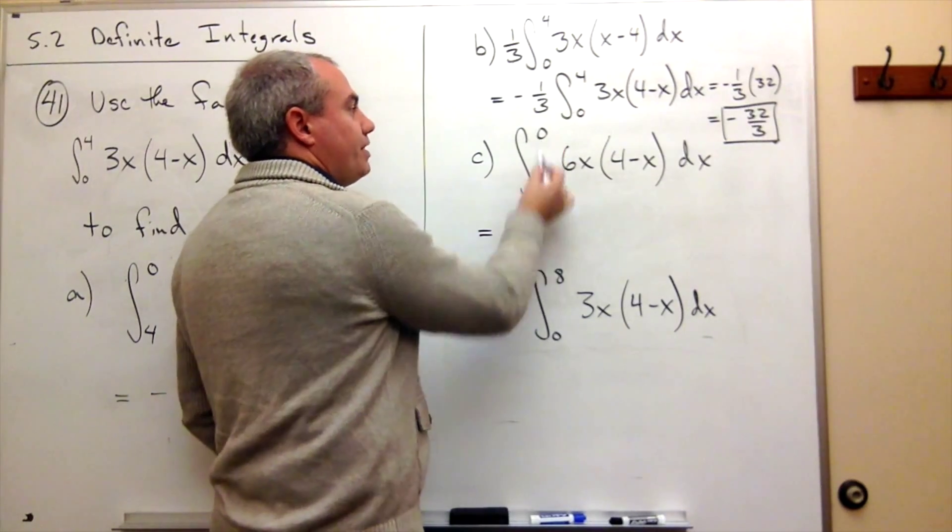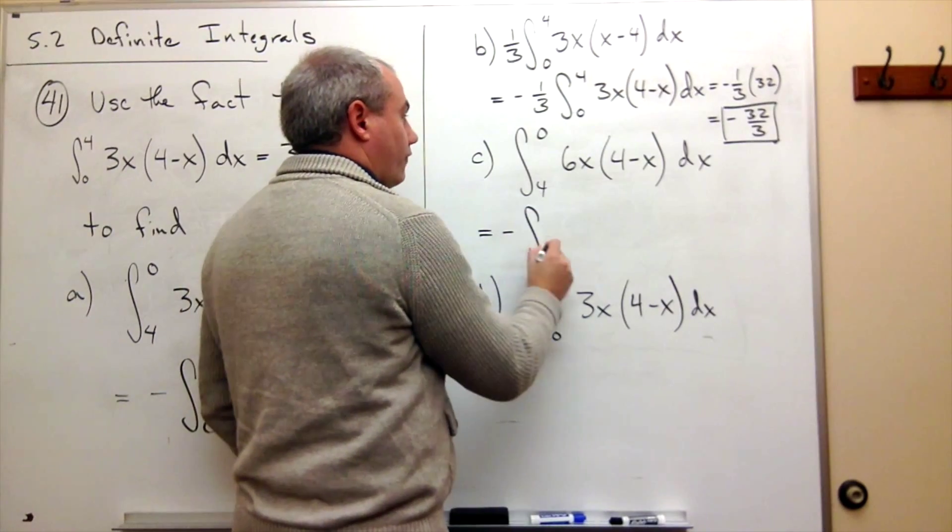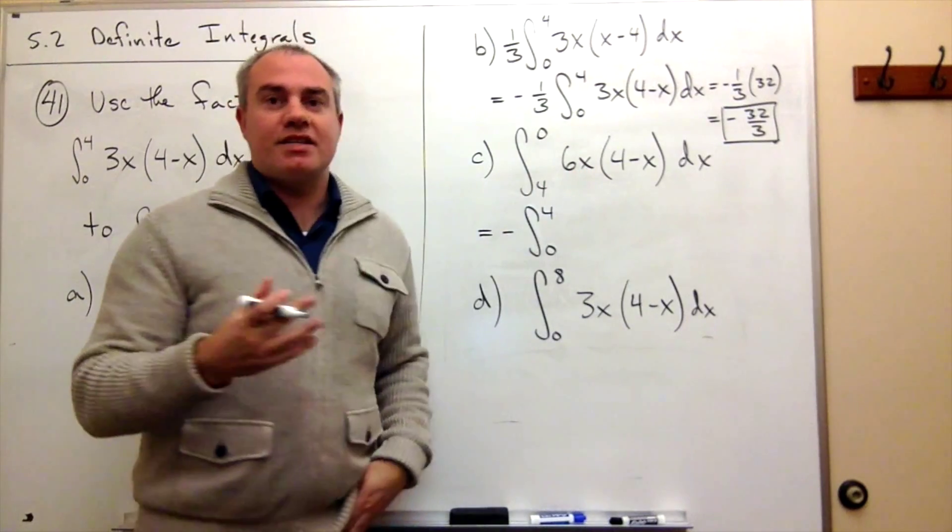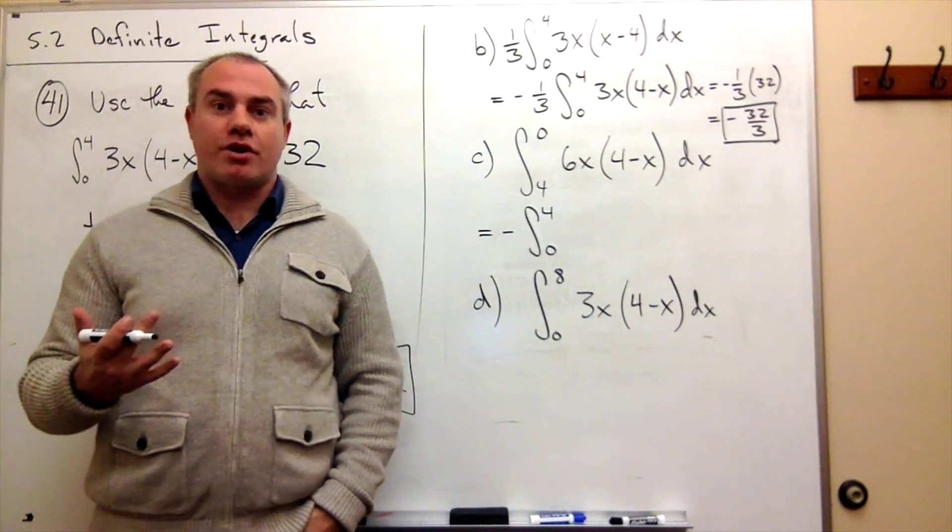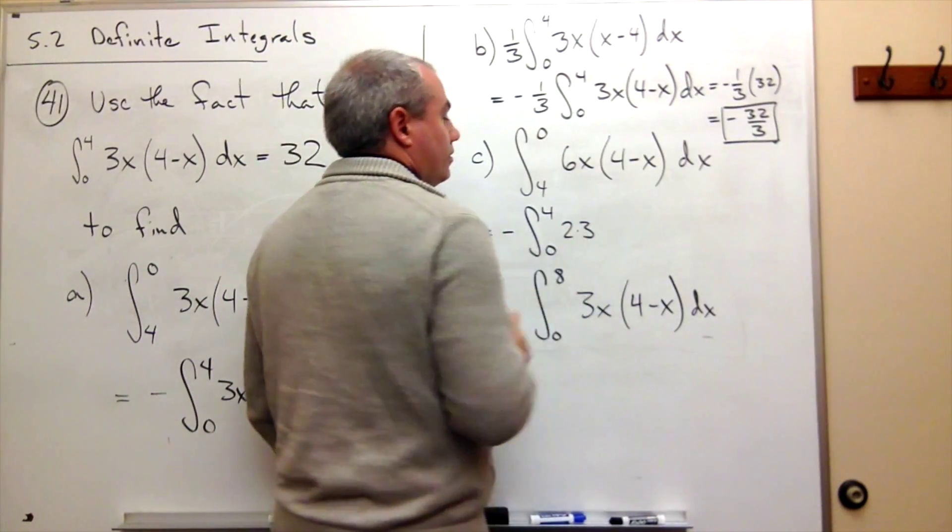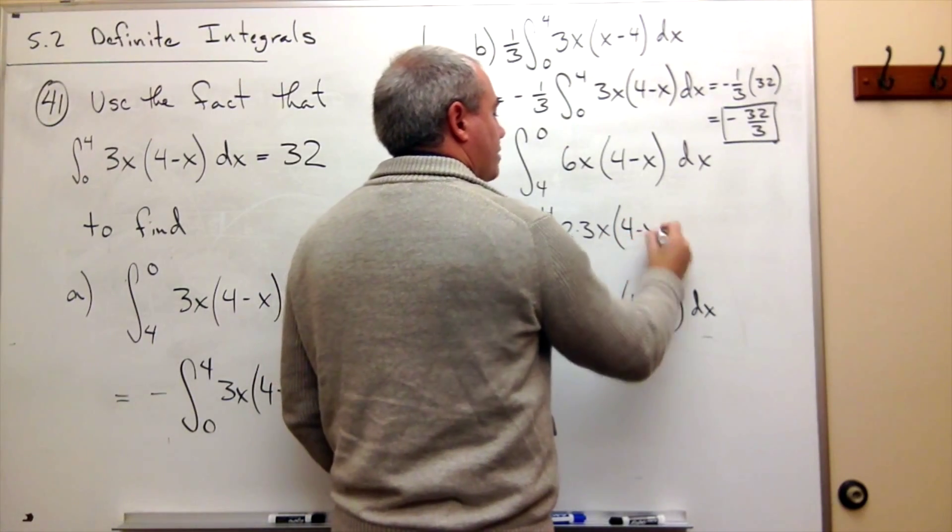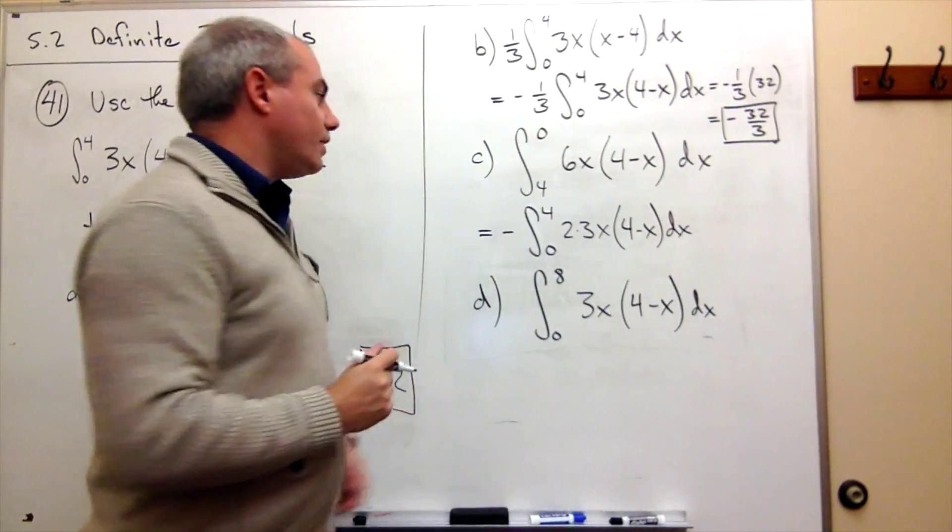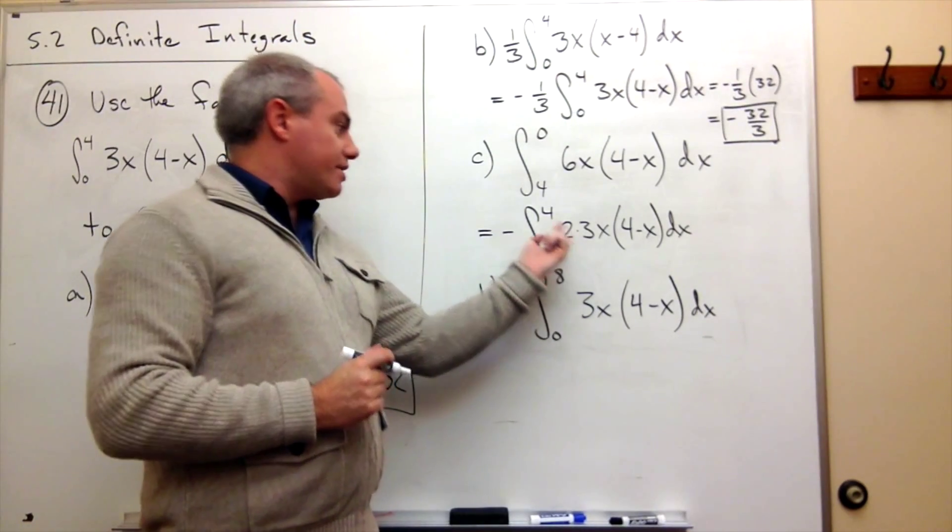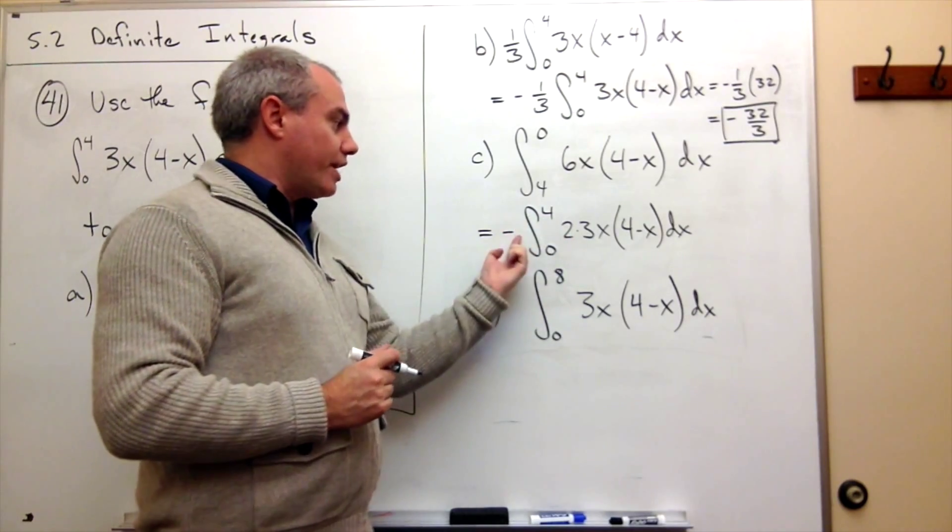I already said if I just flip these guys, I get a negative. So let's say a negative integral from 0 to 4 of 6x. But 6 is 2 times 3. And I want it to be a 3. So let's just write it as 2 times 3x times 4 minus x dx. This 2 is a constant. Constants can move through integral signs. So it's just as good written here as it is written out here. So really quick, I'm just going to take that 2 and put it on the outside.